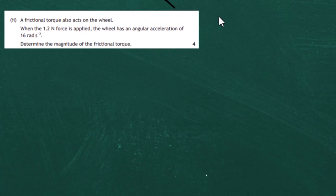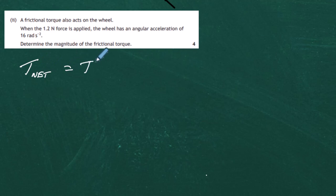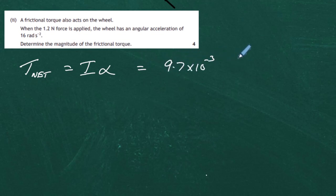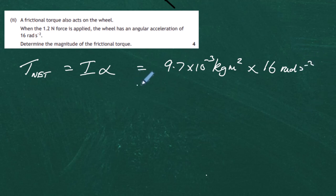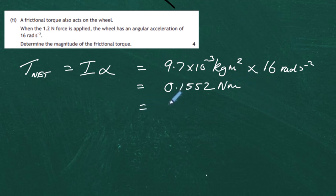Part b continued. A frictional torque also acts on the wheel. When the 1.2 N force is applied, the wheel has an angular acceleration of 16 rad·s⁻². For four marks, determine the magnitude of the frictional torque. The net torque is τ_net = Iα = 9.7 × 10⁻³ kg·m² × 16 rad·s⁻² = 0.1552 N·m, which to two significant figures is 0.16 N·m. That is the torque causing the angular acceleration.